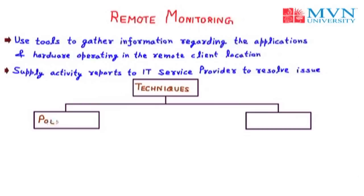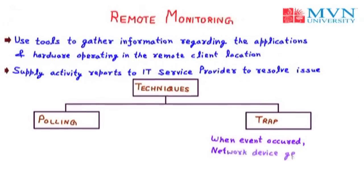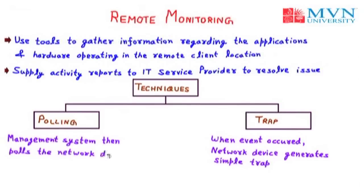The first technique is polling and the second is trap. When an event occurs, the network device generates a simple trap. When the management system receives that trap, it then polls the network device to get the necessary information. So polling is the action taken in response to the trap. The trap basically checks whether there is a problem or an event has occurred at a particular remote location, and when found, the management takes action using the poll to collect all information.